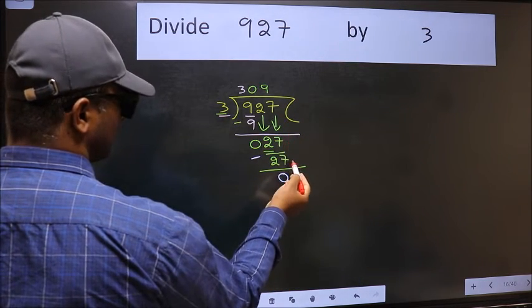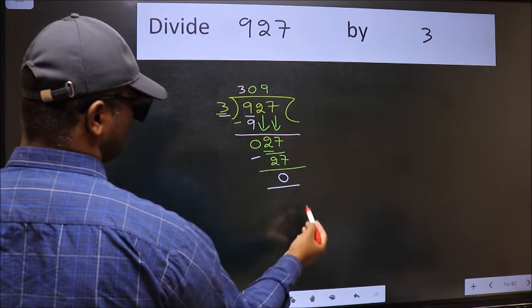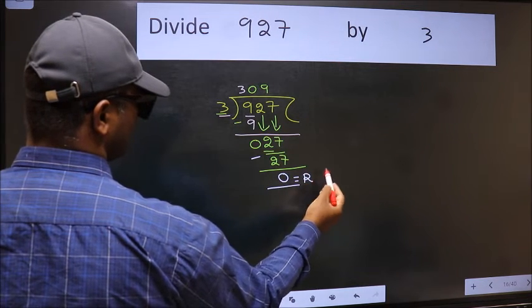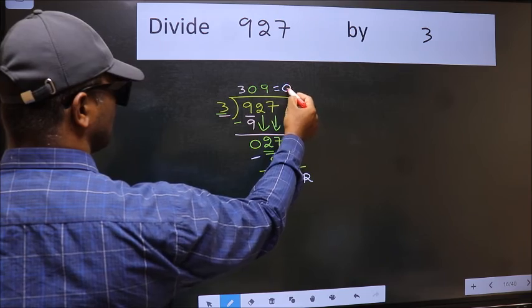No more numbers to bring it down. So we stop here. This is our remainder and this is our quotient.